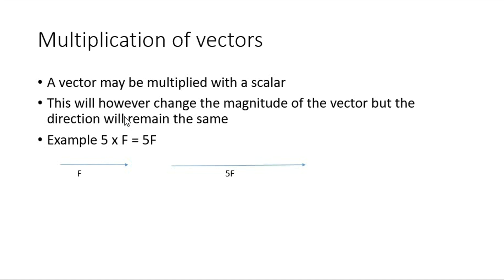When it comes to multiplication of vectors, this is a very short section. A vector cannot be added to a scalar, but it can be multiplied with a scalar. This will change the value of the vector, but the direction remains the same. If you have a force and then a five times greater force, all that happens is your original force became five times greater, but still going in the same direction — giving you 5F.